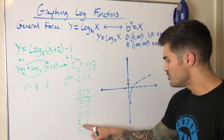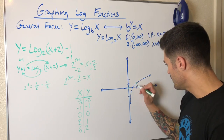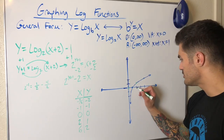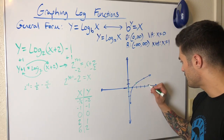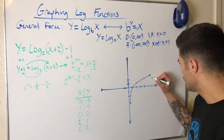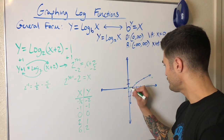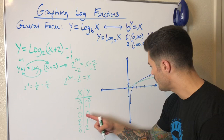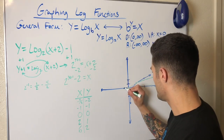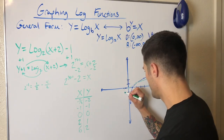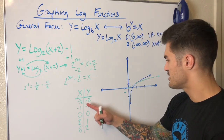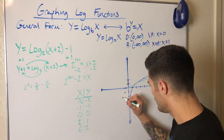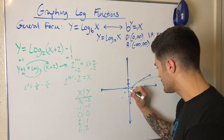Now let's plot all these points. I'll start with (0, 0). Then (2, 1), and (6, 2) — that's way over to the right. Then (negative 1, negative 1) and (negative three-halves, negative 2), which is right between negative one and negative two on the x-axis. I can see what's happening and draw this curve.